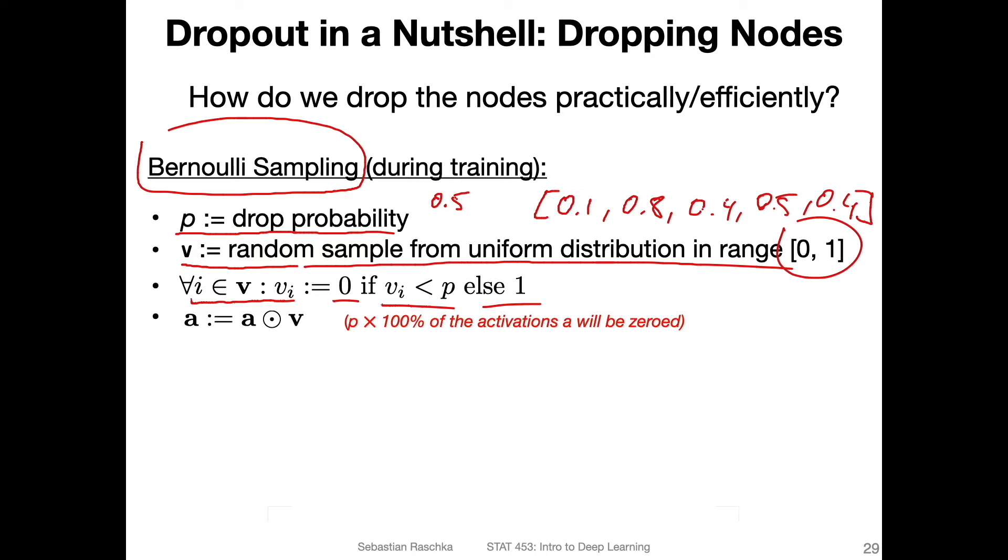We're modifying this so it's a binary vector. This one is smaller than 0.5, so we set it to zero. This one is greater, so we set it to one. We now have this binary vector. Then we simply multiply this binary vector with our activations a—the activations in our hidden layer. Now we've effectively canceled activations. That's how we can apply dropout during training.